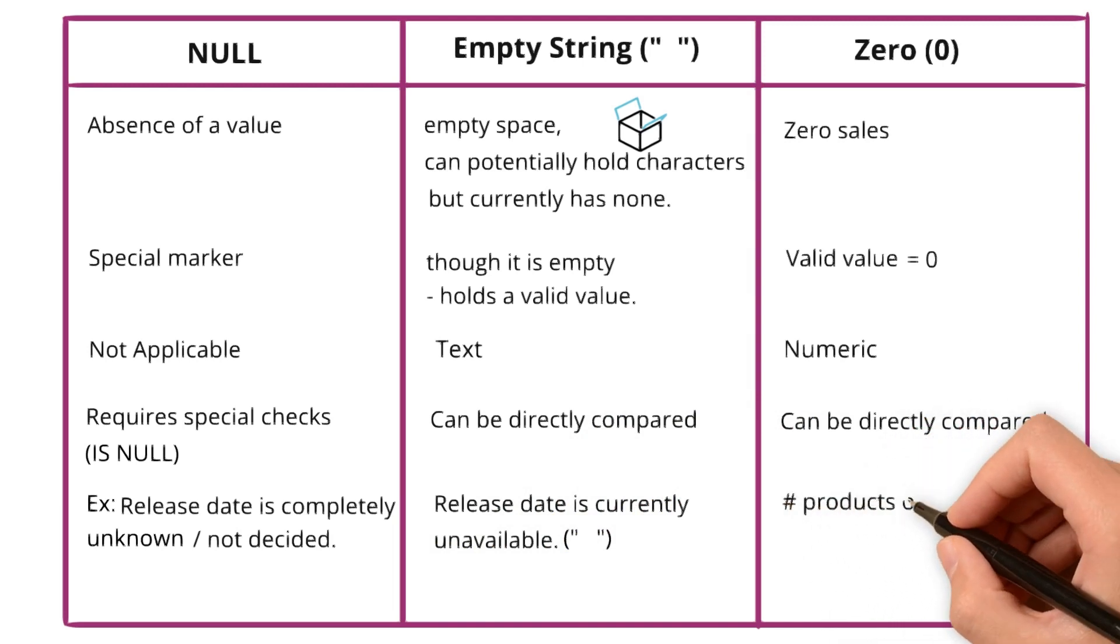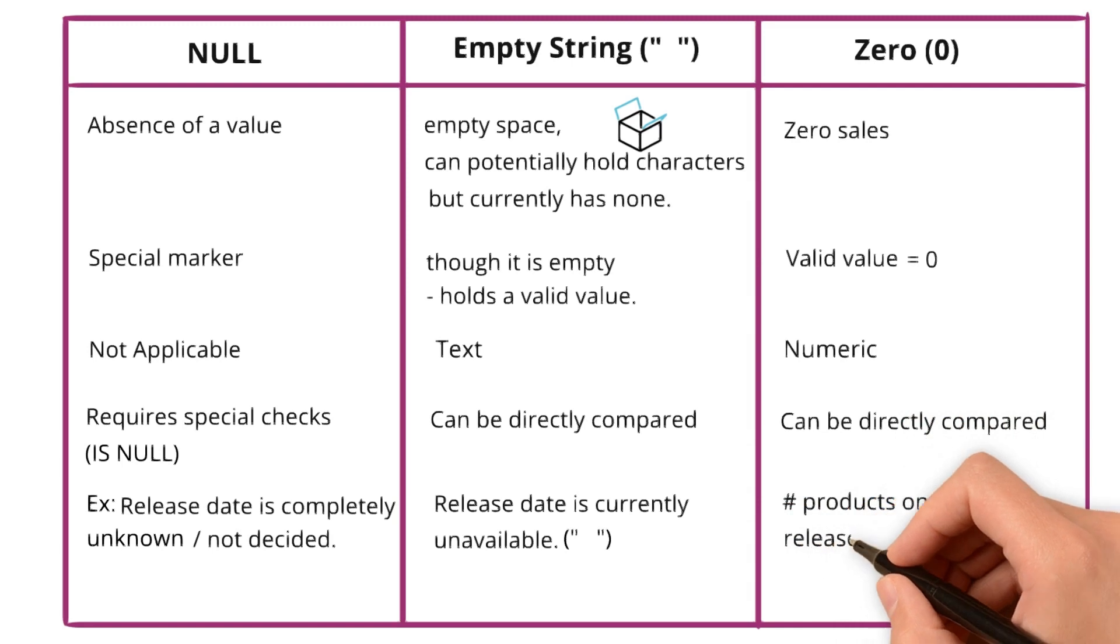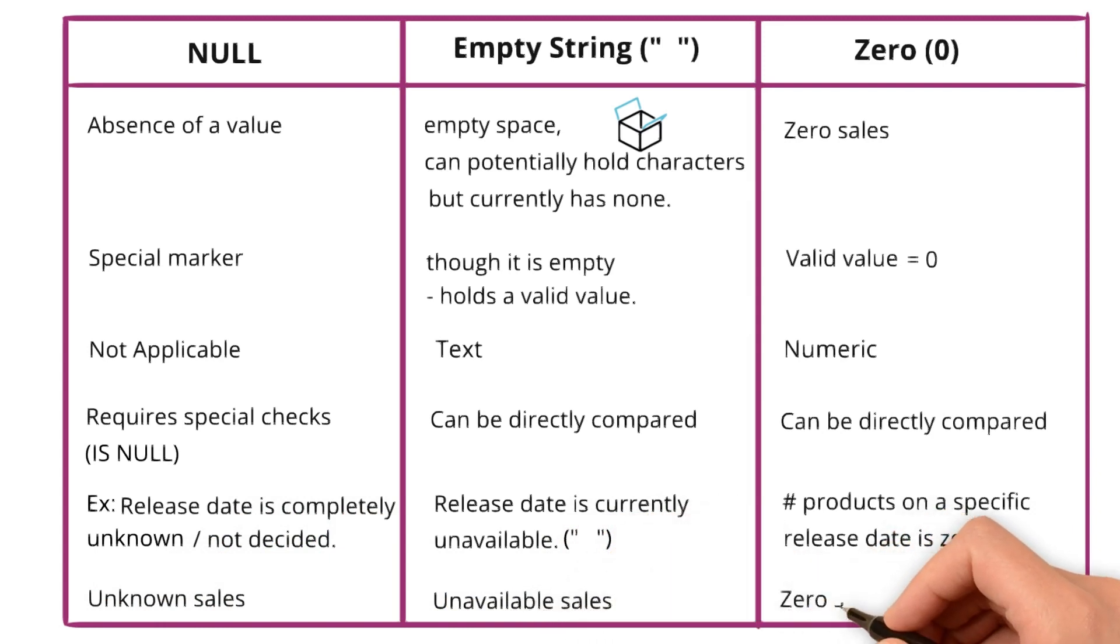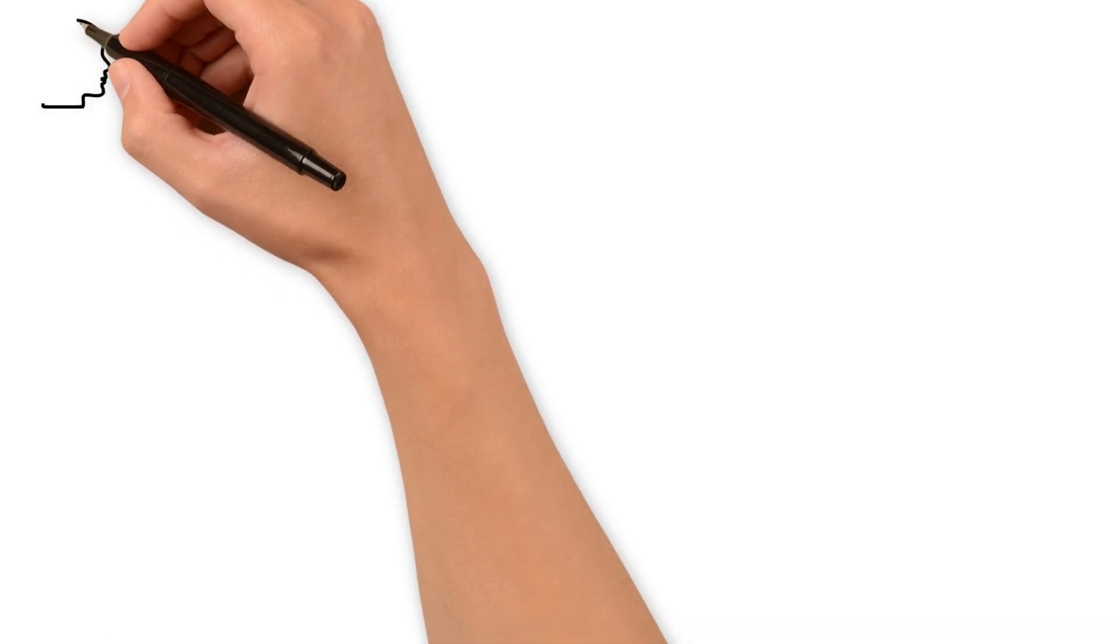Lastly, number of products on a specific release date is 0. Think of this: unknown sales versus unavailable sales versus zero sales. That's the fundamental difference.